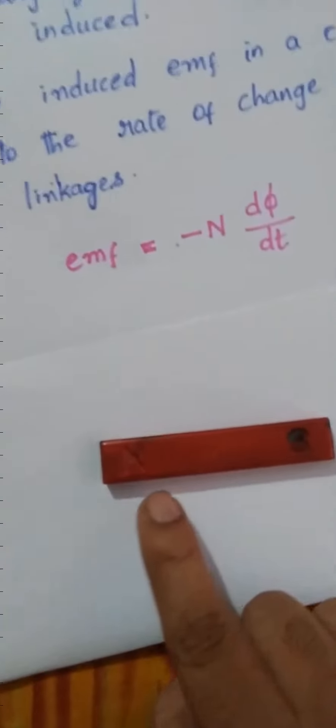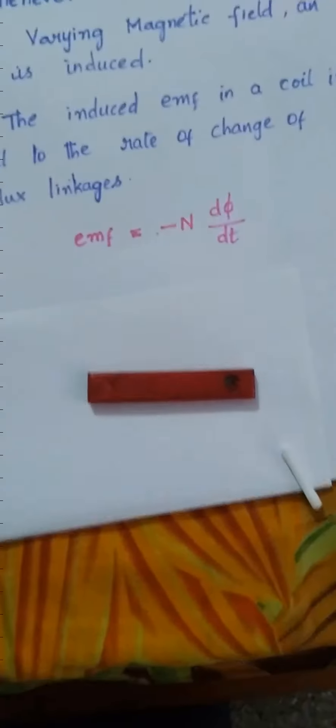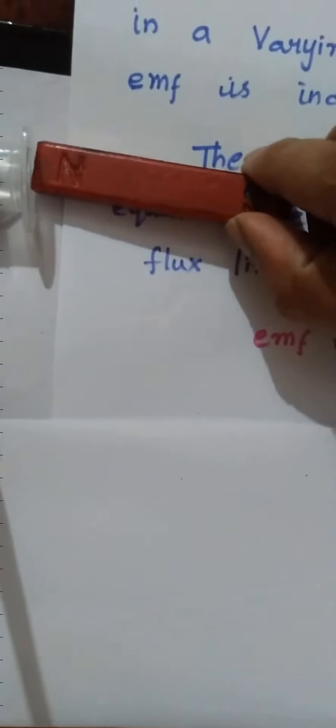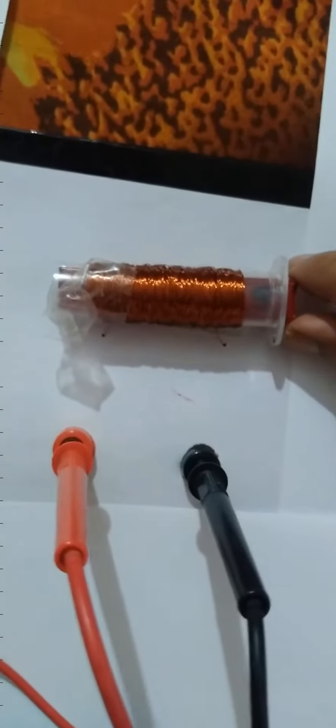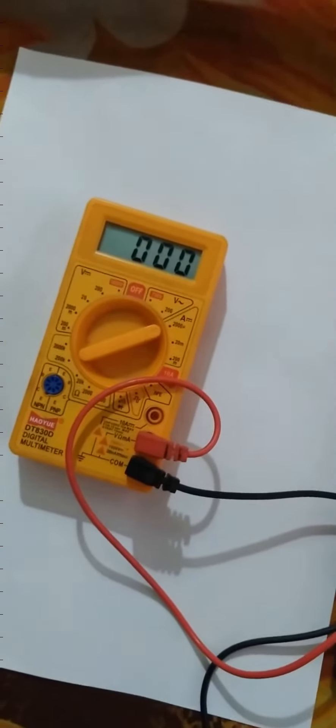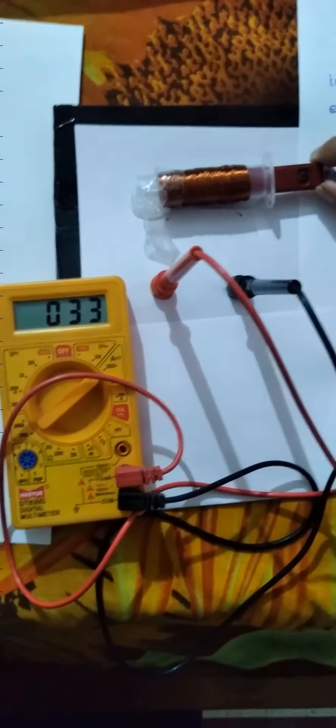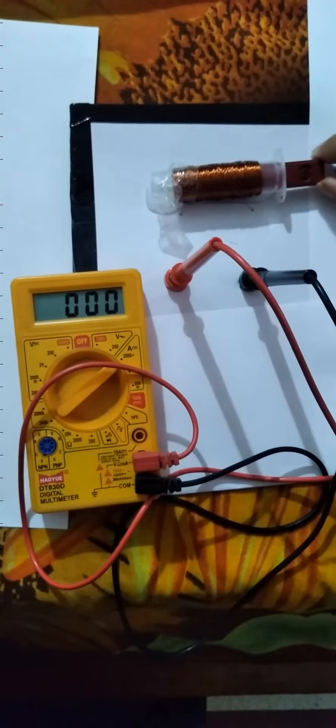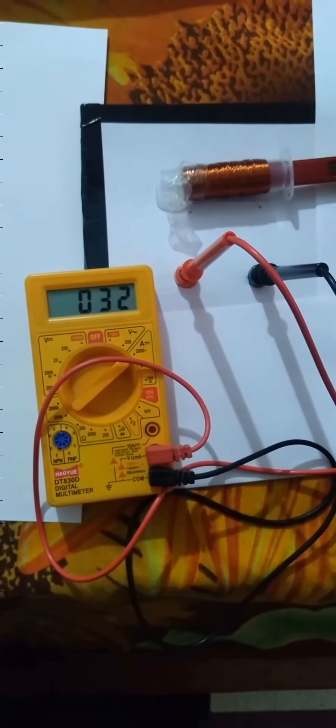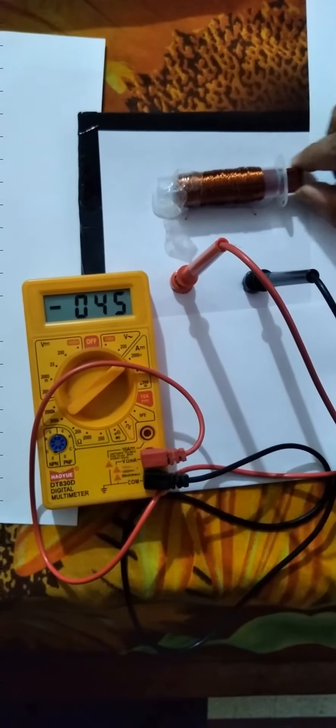So now this is bar magnet. This bar magnet is placed inside the coil. Just observe the multimeter readings. There is no deflection in multimeter. Now the magnet is moved, multimeter shows the deflection. So one time positive current, another time negative current.